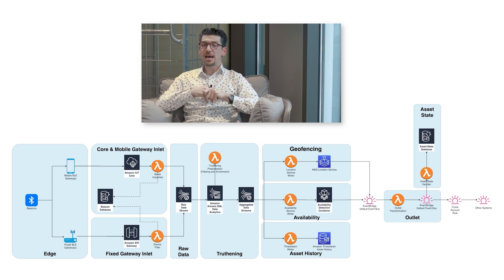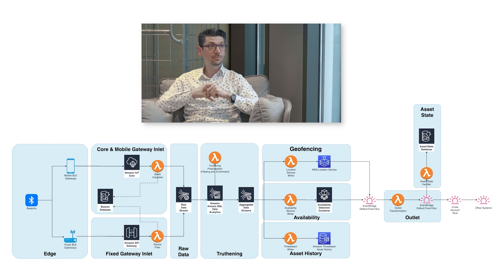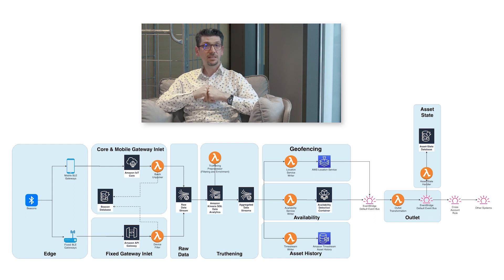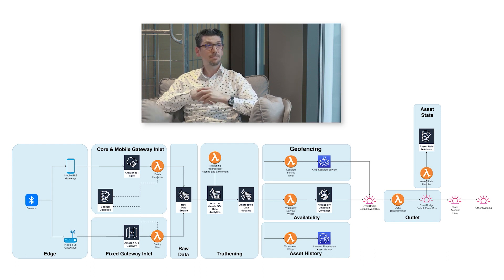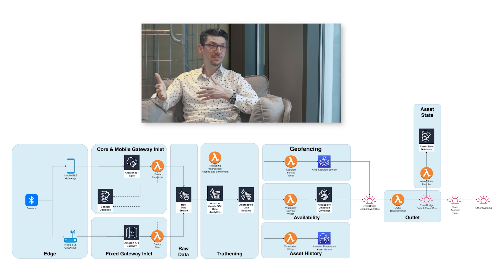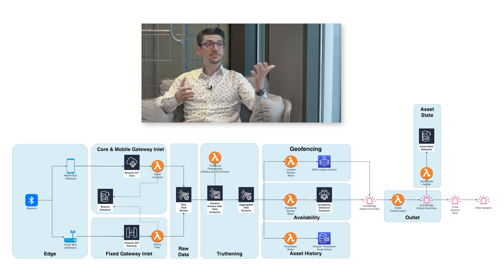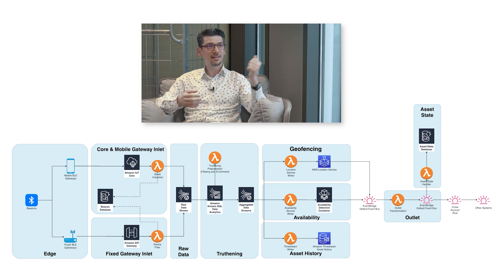Other than availability, we have something called asset history. As you can see from the architecture diagram, the data also flows into this module. Asset history allows us to write down the detections from a certain beacon or asset and then bring up a map, plot the route of that asset, and see what is happening in the field. This is really good for connecting the physical world to the digital world — you can assess whether your logistic processes are actually happening as intended.